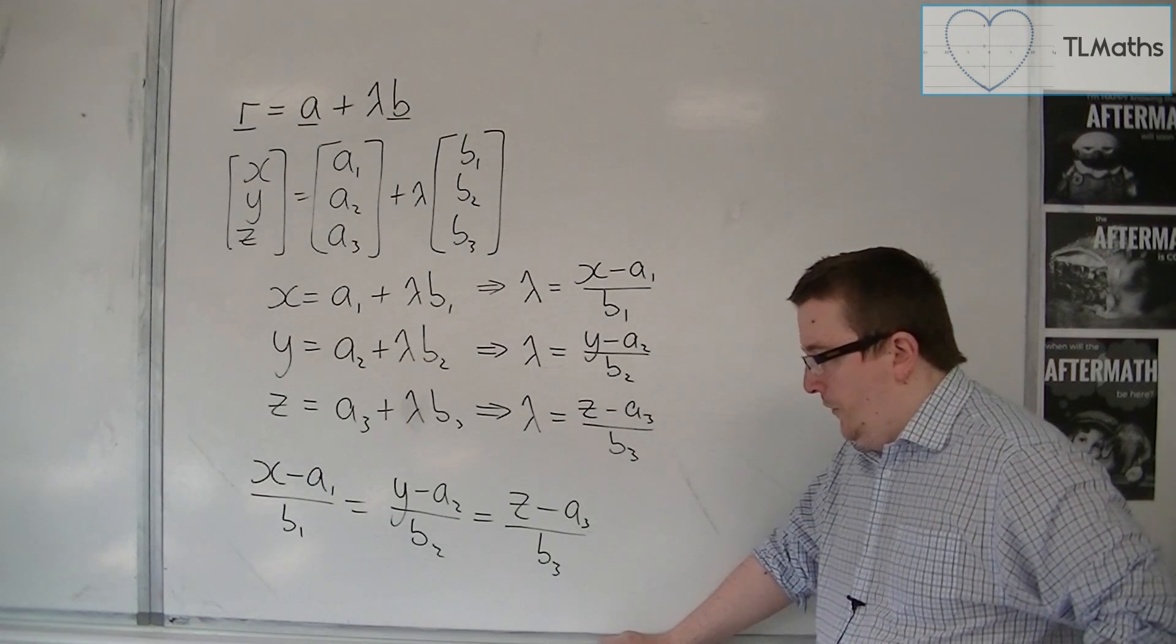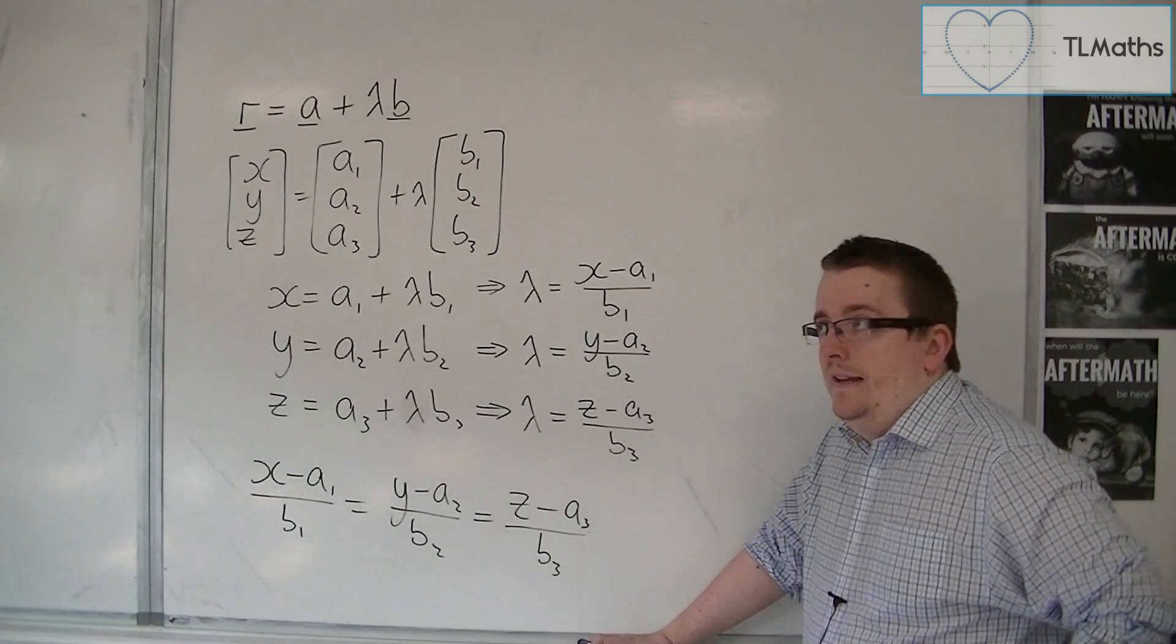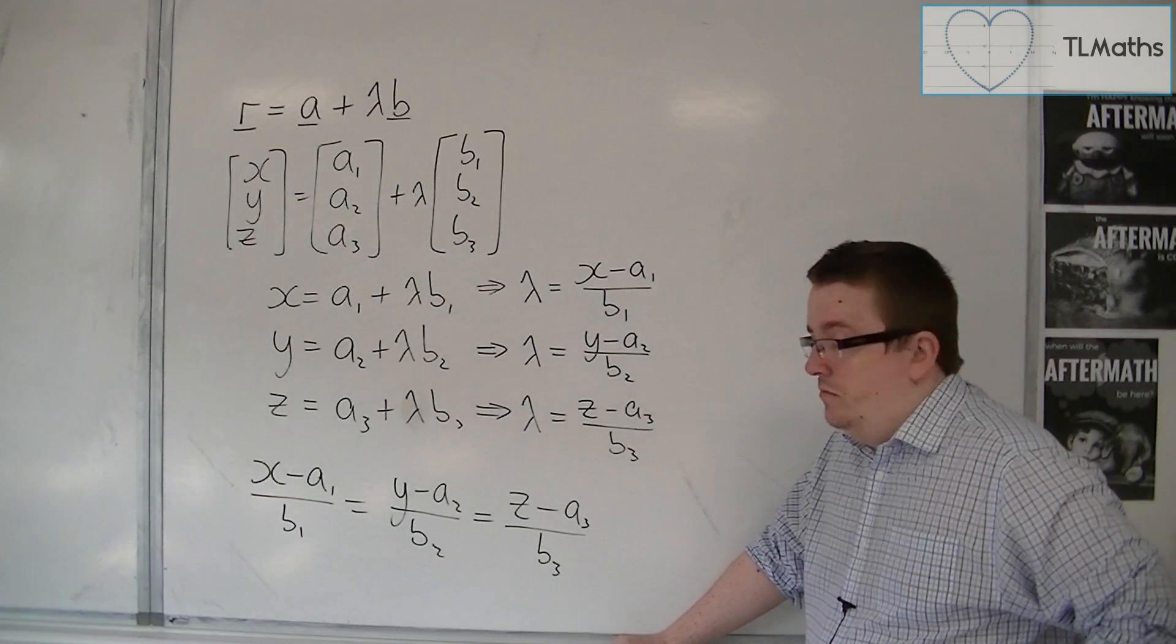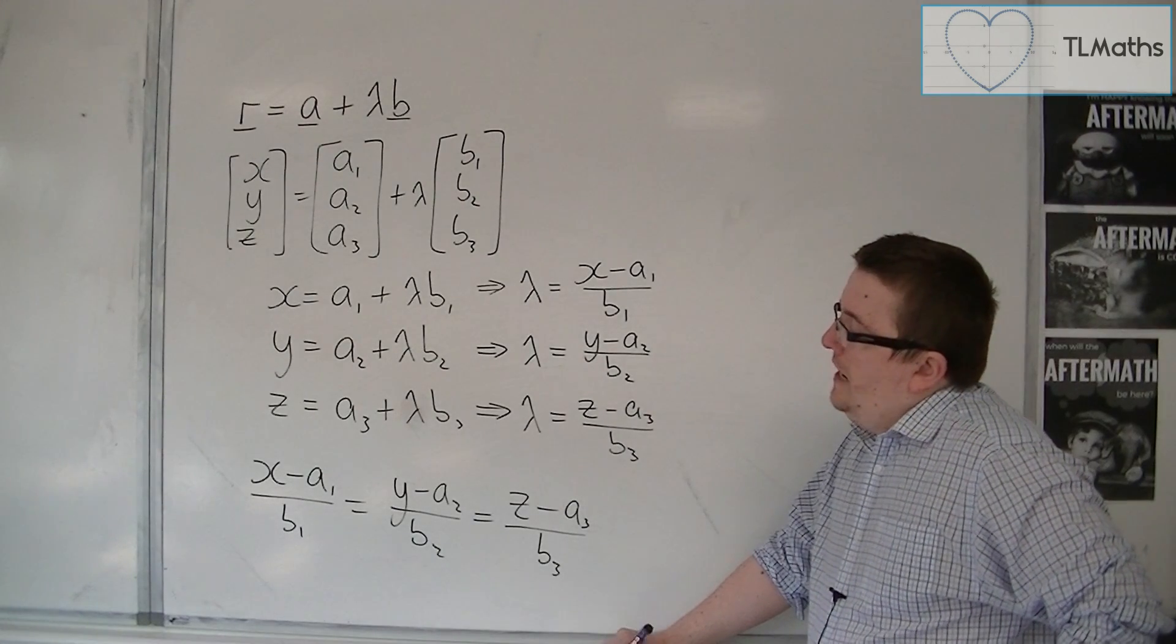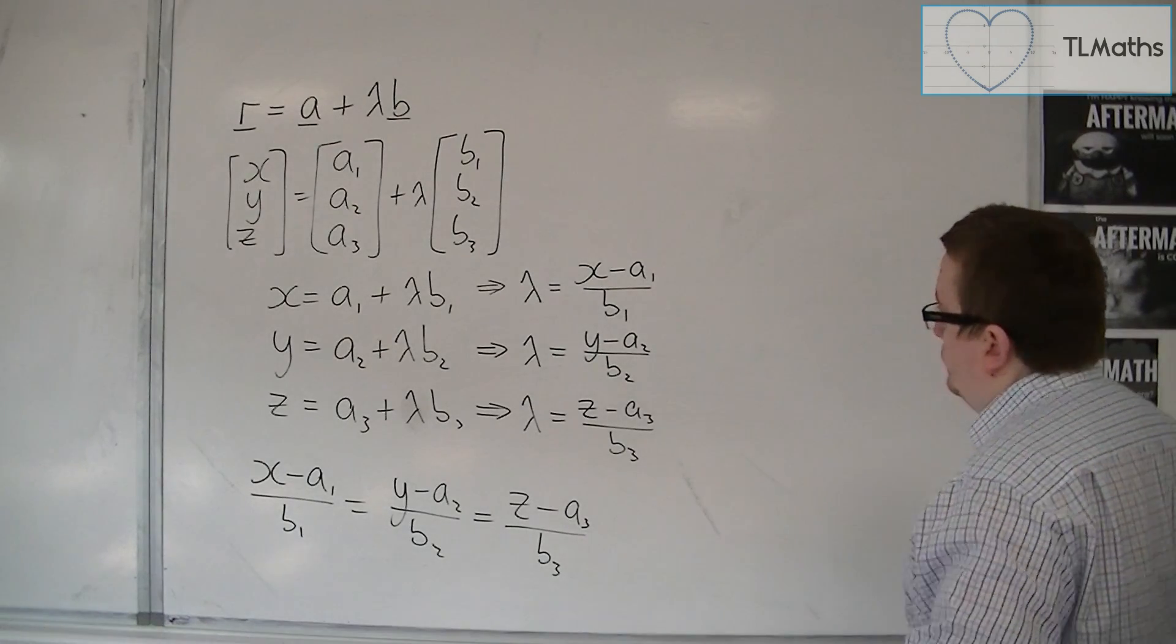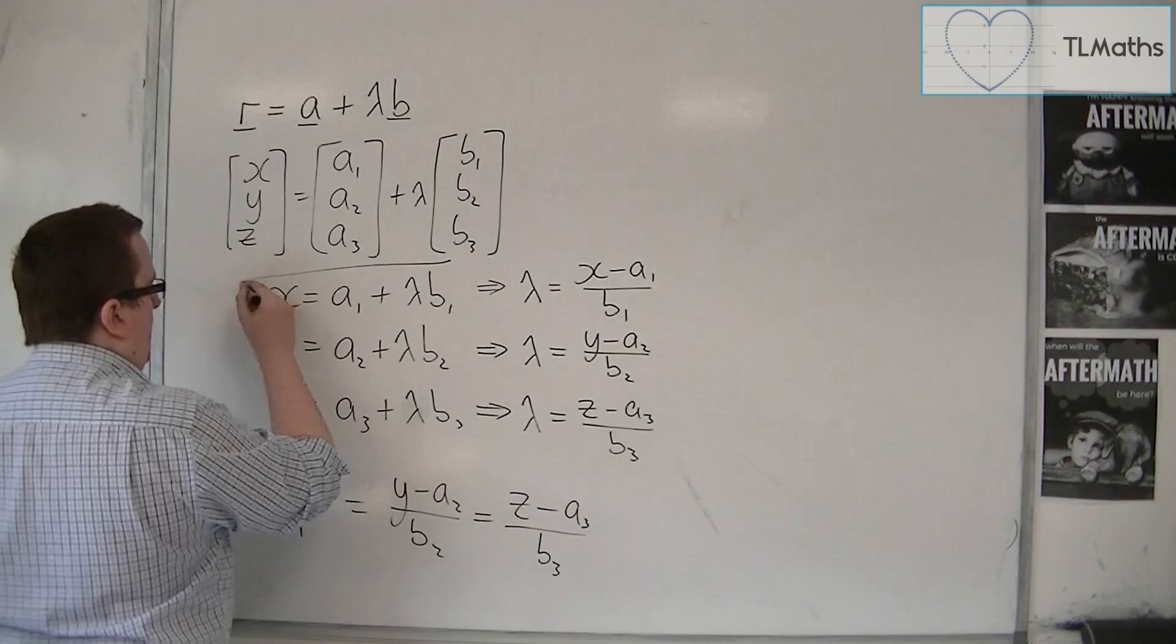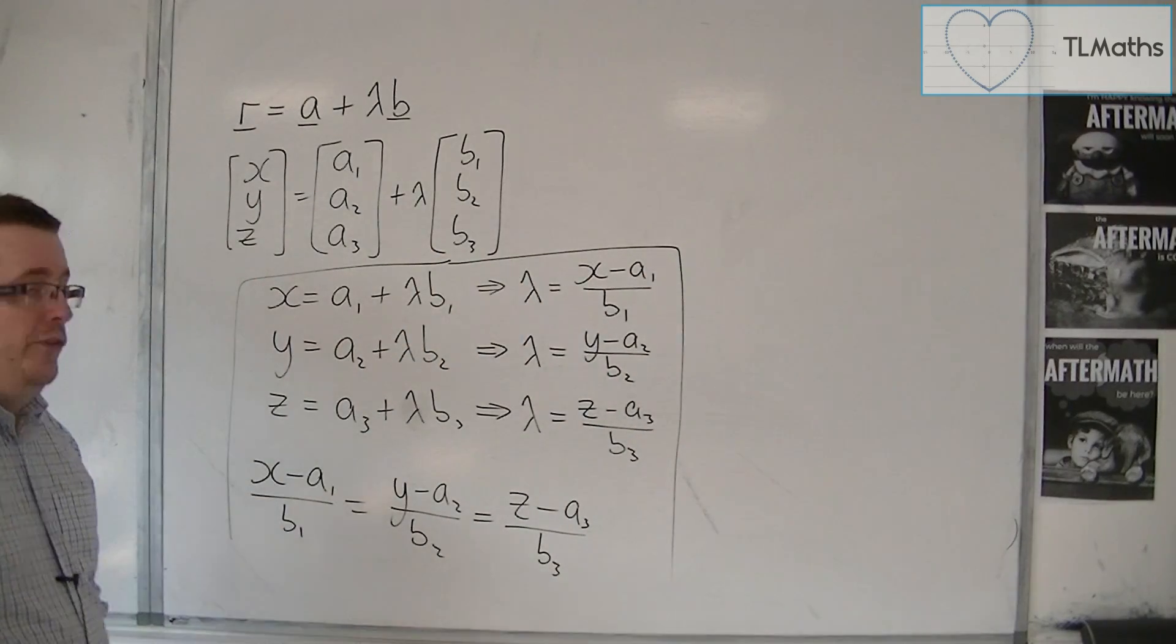What happens if either b1 or b2 or b3 or more is equal to 0? So if that is the case, so let's say that in this case, b1, b2, and b3 are non-zero.